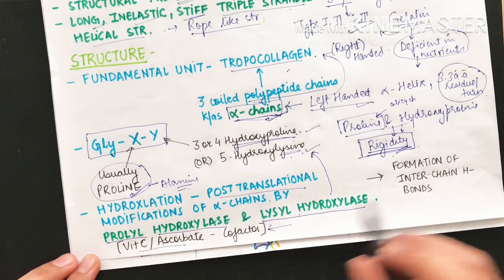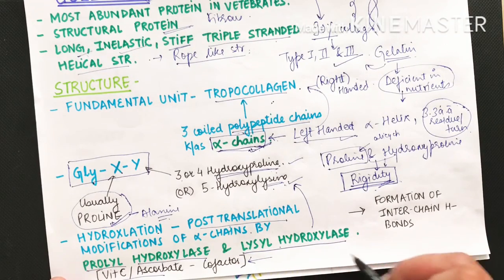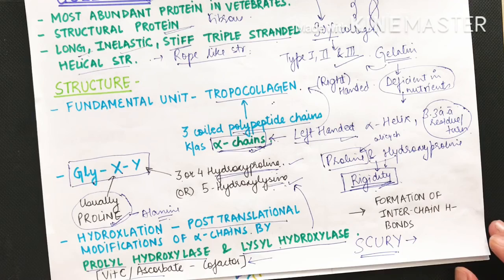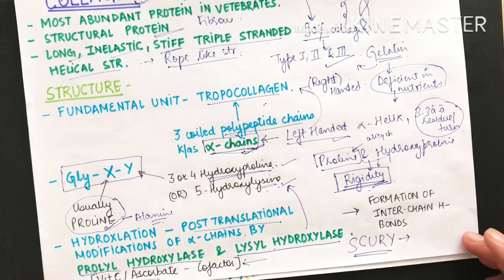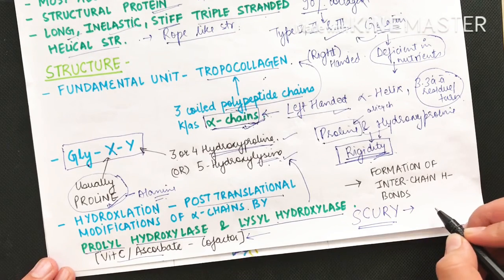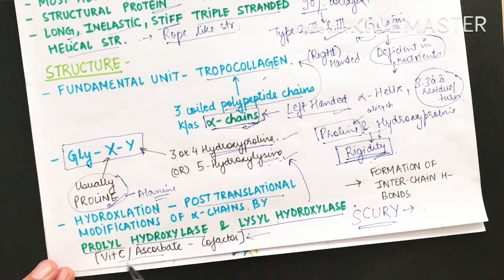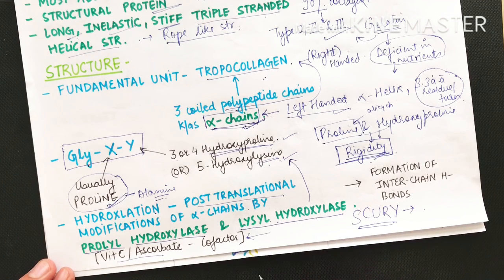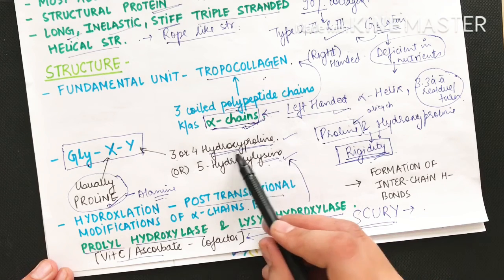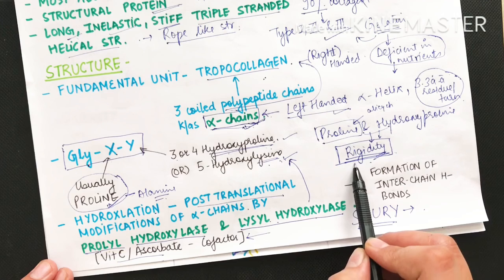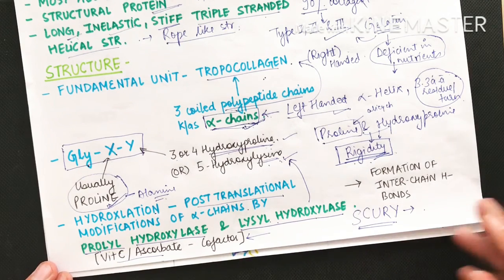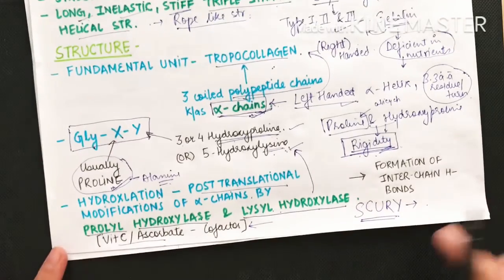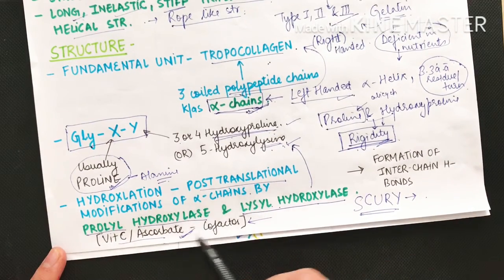Because vitamin C is required as a cofactor for prolyl hydroxylase and lysyl hydroxylase, vitamin C deficiency reduces these enzymes' activity. This means we don't get hydroxyproline and hydroxylysine, which means no rigidity — and so our gums become weak, causing the disease of bleeding gums known as scurvy. Vitamin C or ascorbate helps the whole collagen synthesis process.